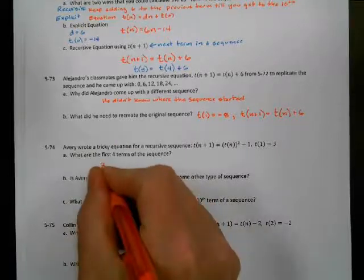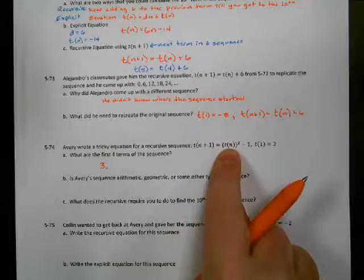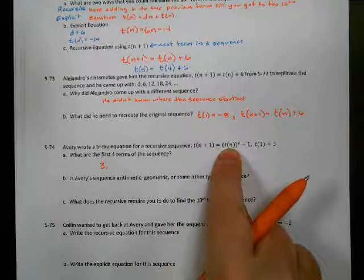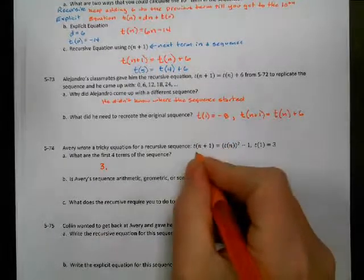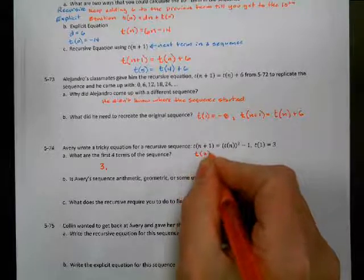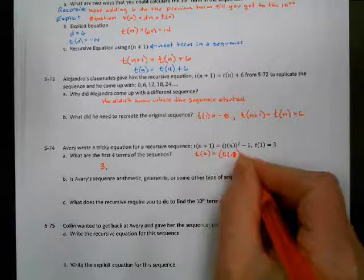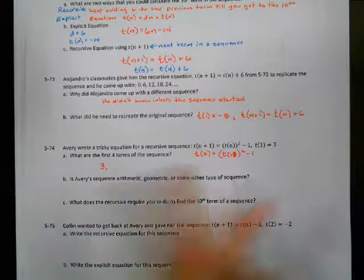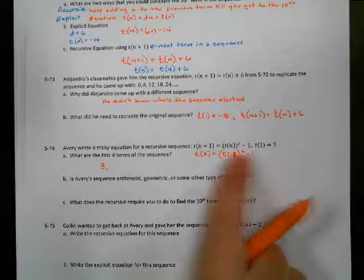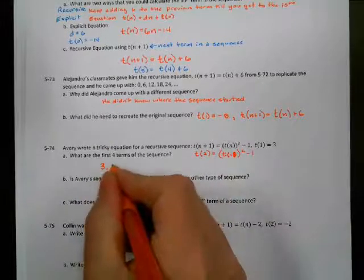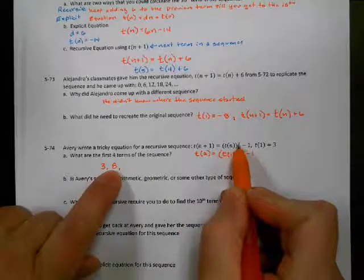So 3 is our first term, and we need three more. T of n plus 1 is the next term; t of n is the previous term. What are we doing to it? We're squaring it and then subtracting 1. To find the second term, take t of 1, square it, and subtract 1: 3 squared is 9, minus 1 is 8. To get the third term, take the previous term 8, square it — 64 — subtract 1: 63. To get the fourth term, take 63, square it: 63 times 63 is 3,969, subtract 1: 3,968.